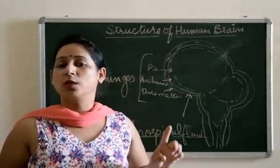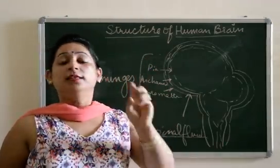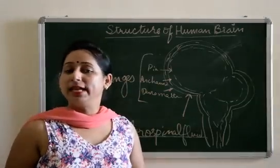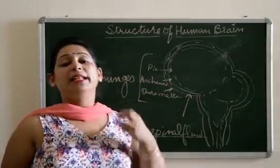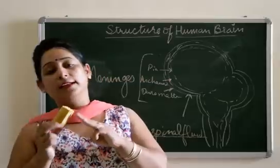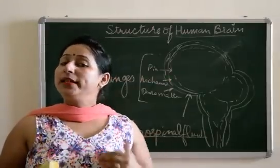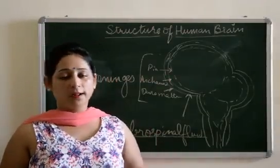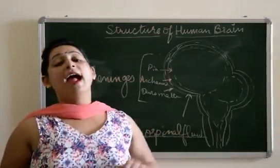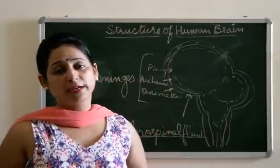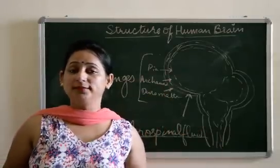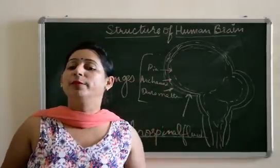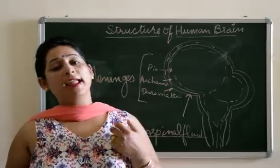To revise: the hard protective covering outside the brain is known as the cranium. The protective coverings present over the brain are known as meninges. Meninges are three in number — dura mater, arachnoid, and pia mater. Between these meninges there is a fluid known as cerebrospinal fluid, and the function of cerebrospinal fluid is to protect the brain from any kind of shock or mechanical injury.